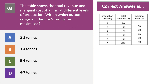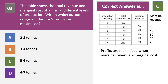The answer is C. The marginal revenue of the third unit is 50, the fourth unit is 40, the fifth unit is 30, and the sixth unit is also 30 — which is when marginal cost equals 30. So profits are maximized in the range of five to six units, where MR meets MC.